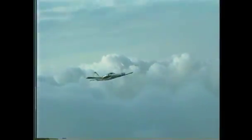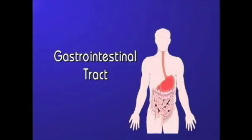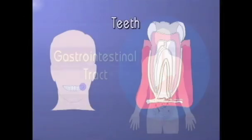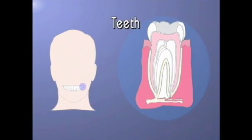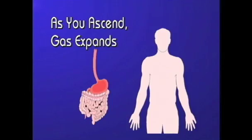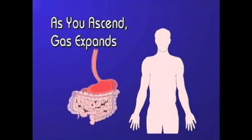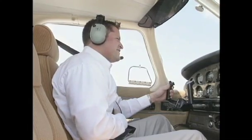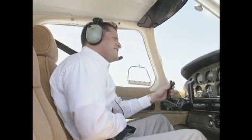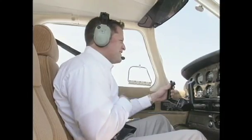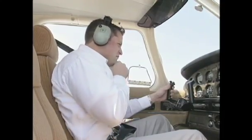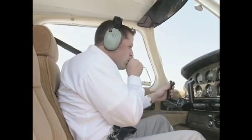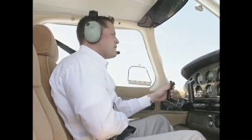During the ascending phase of a flight, you are more likely to develop problems in the gastrointestinal tract. In rare occasions, teeth may also be the source of gas expansion problems. As you ascend, gas expands in the stomach and the intestines, which can cause abdominal pain and in severe cases may even cause fainting. The human body has two avenues that allow gas to escape: burping and flatulating, commonly referred to as passing gas.